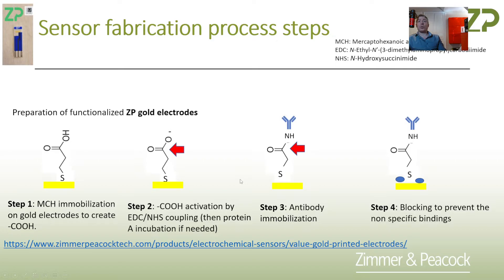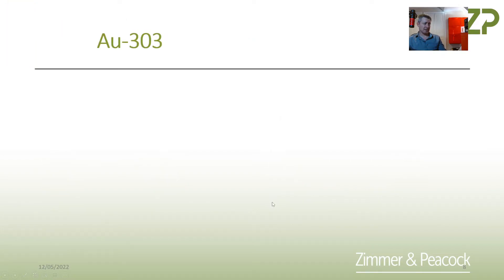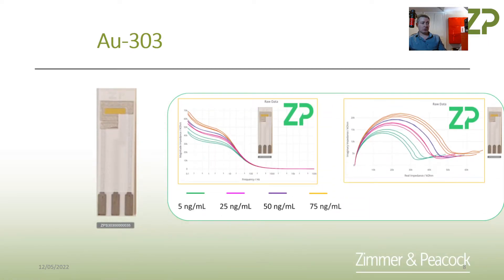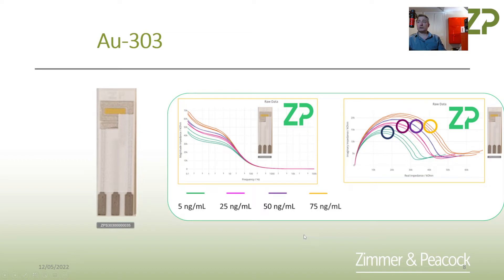So there's quite a standard workflow for turning a gold electrode into an immunosensor or a molecular assay. At ZP we do do this — we take our Value Gold electrodes, turn them into an immunosensor, and test it against a concentration of antigen, getting a nice strong signal using impedance spectroscopy. Impedance spectroscopy is quite good for this, as is differential pulse voltammetry and square wave voltammetry.